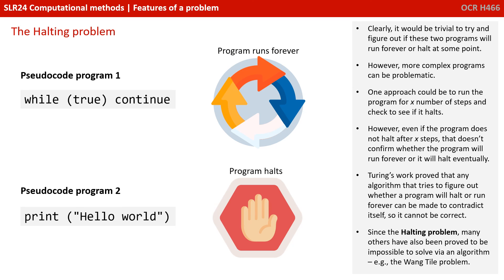One approach could be to run the program for X number of steps or iterations and check to see if it halts. However, even if the program doesn't halt after X steps, that doesn't confirm whether the program will run forever or will eventually halt. Turing's work proved that any algorithm that tries to figure out whether a program will halt or run forever can be made to contradict itself, so therefore cannot be correct.